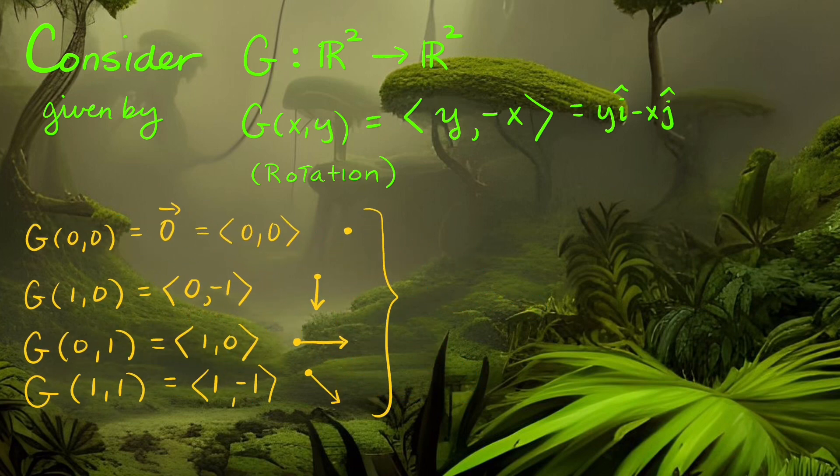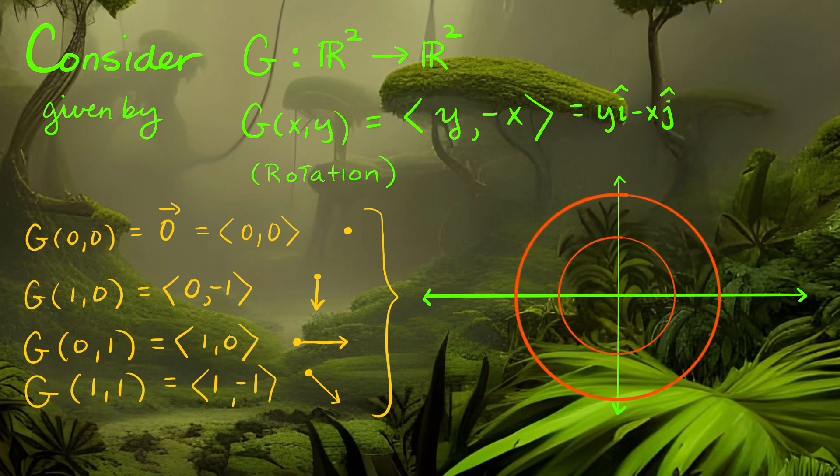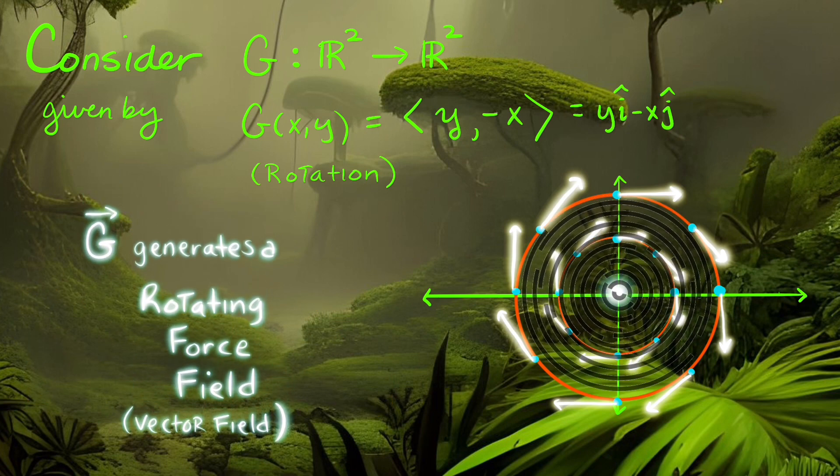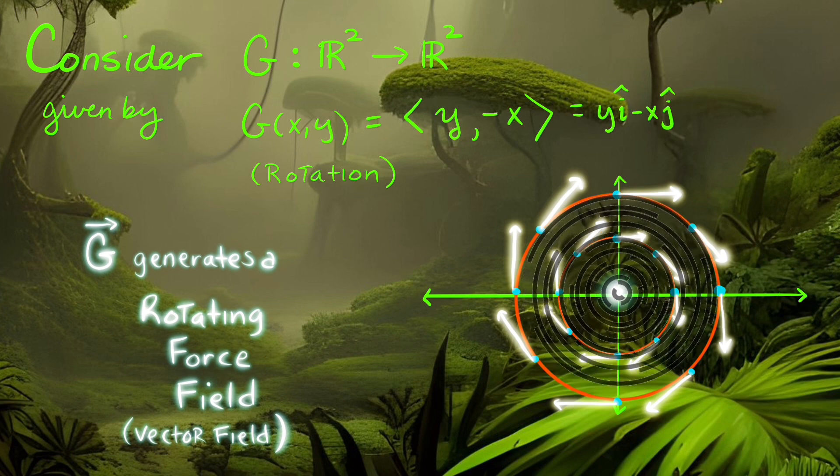Working out some of the tangent vector directions given by this field and then graphing them, we find that at (0,0) we have the zero vector, at (1,0) we have a vector pointing downward, at (0,1) we have the vector pointing to the right, and at (1,1) we get (-1,1) pointing in a diagonal direction. Plotting these vectors along their different level curves, we are plotting the rotational field that emerges.